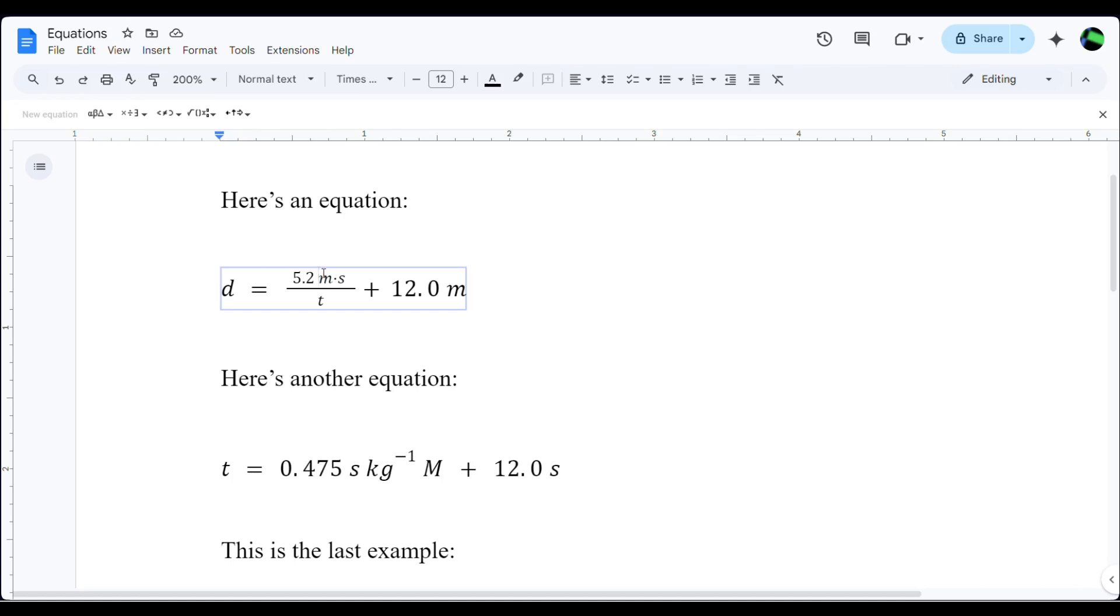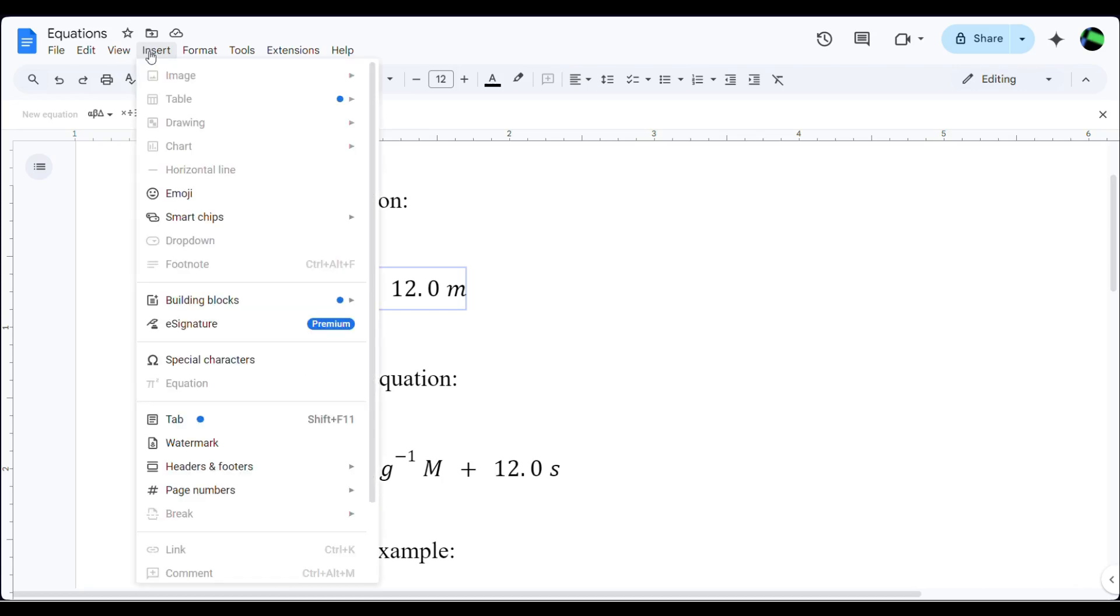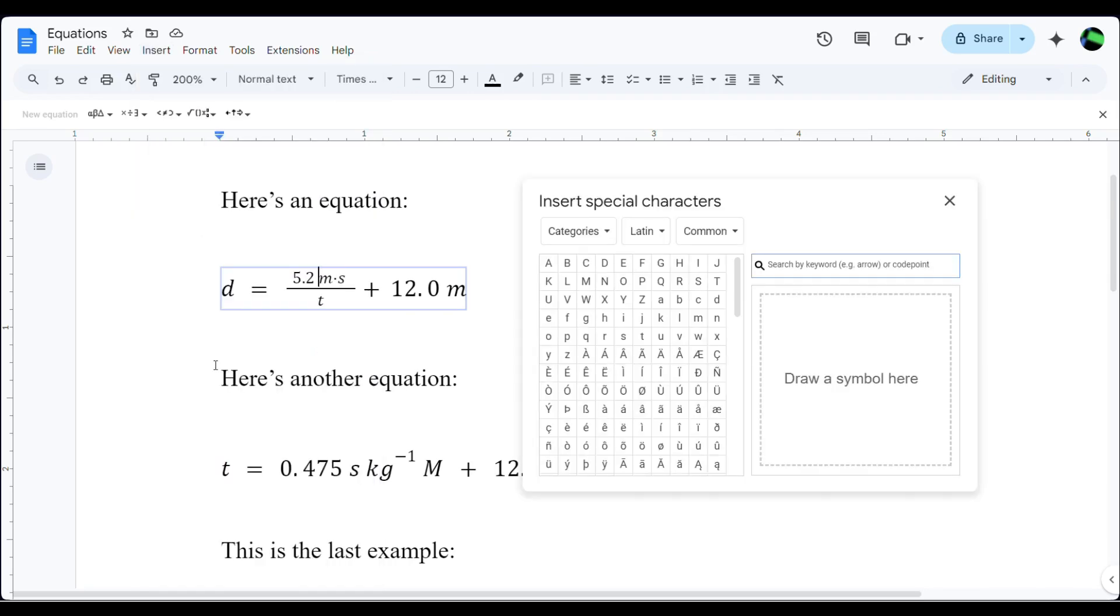Here's the workaround I suggest. You're going to insert a non-italicized M. The way you can do that is go to Insert, then Special Characters.